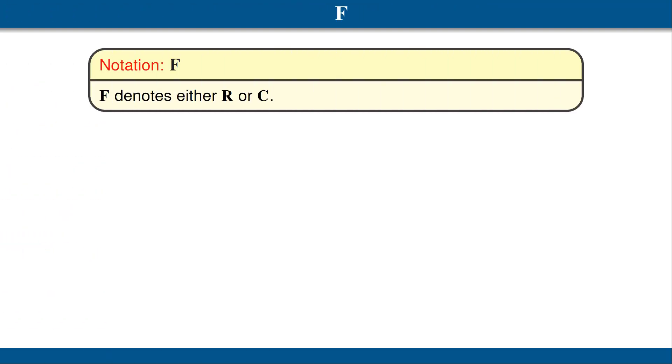So that we can conveniently make definitions and prove theorems that apply to both real and complex numbers, we adopt the following notation. F denotes either R or C. Elements of F are sometimes called scalars, which is just a fancy word for numbers. The letter F is chosen to represent either R or C, because R and C are examples of what are called fields.